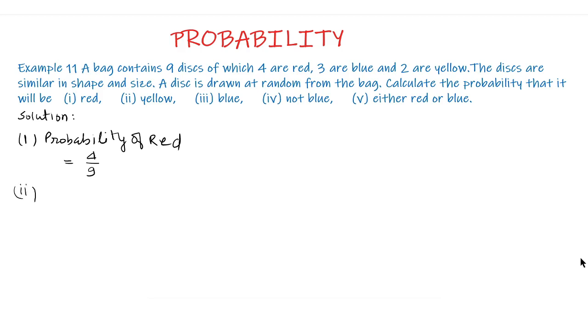Part 2, probability of yellow: as there are 2 yellow disks, therefore the probability of yellow equals 2 upon 9.